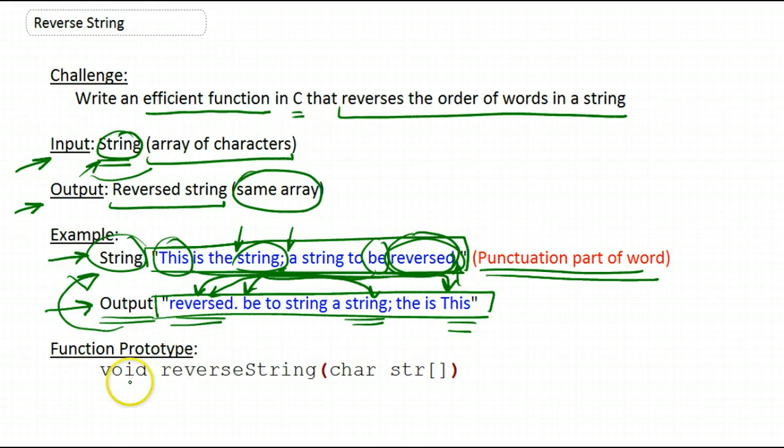Your function prototype will be the following: you won't have to return anything because your result will be stored in the string that is being passed to you. You're just overwriting that string with the output, and your function will be called reverseString.